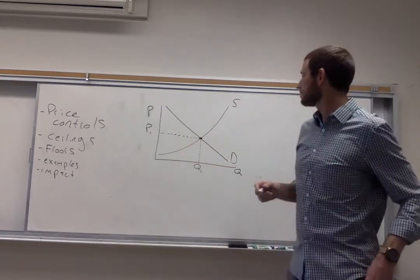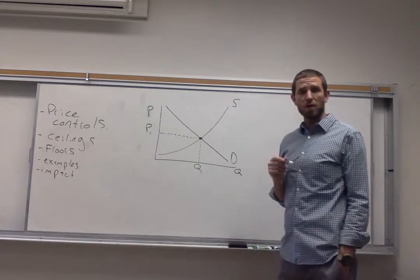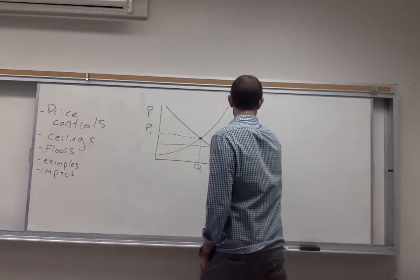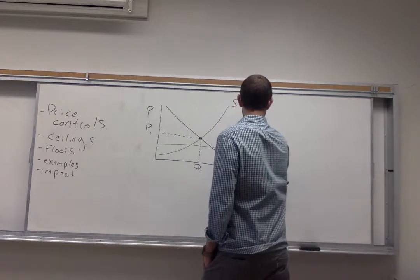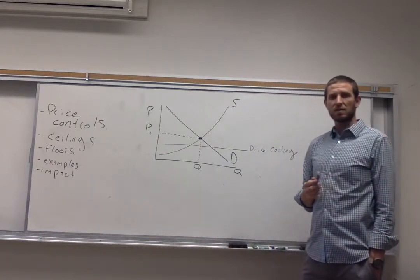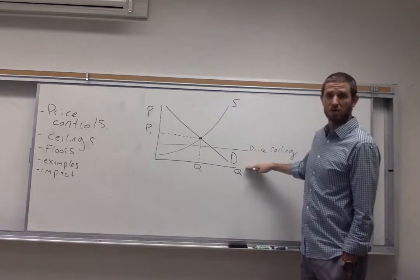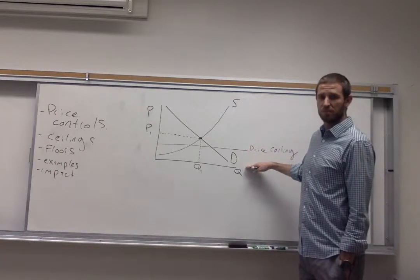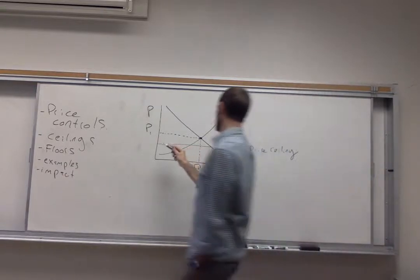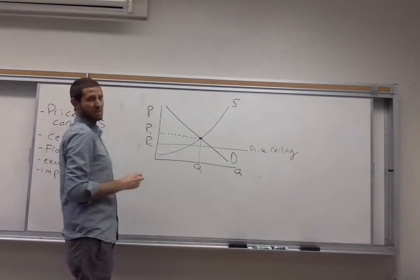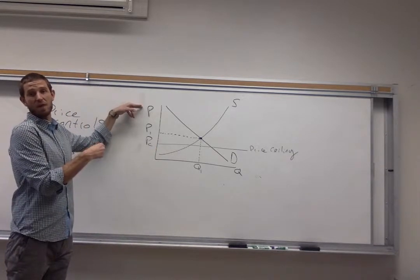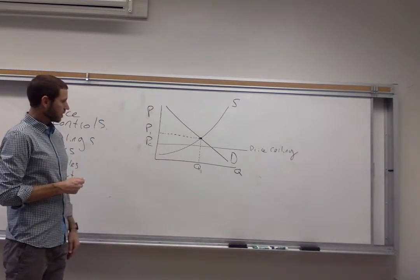The way that you're going to want to model a price ceiling is by drawing a horizontal line that looks just like this. So this would represent our price ceiling. So what that means is that any price that's below this cutoff would be acceptable. However, that's the maximum price right here at that line. Maybe we'll call this P sub C for price ceiling. The price cannot be up here at P1 or anything up above PC on that graph.